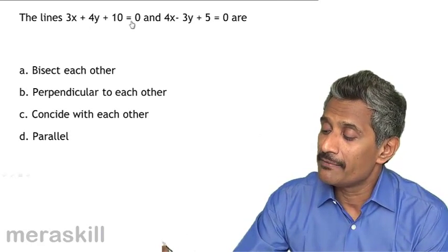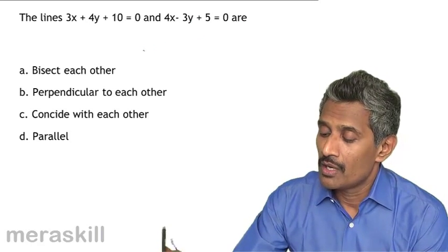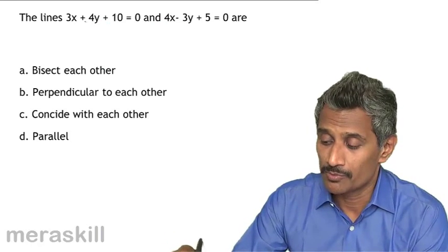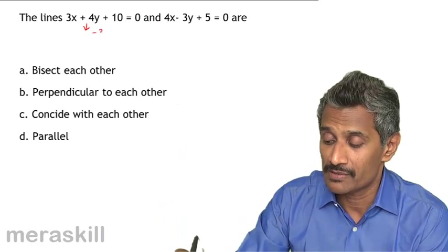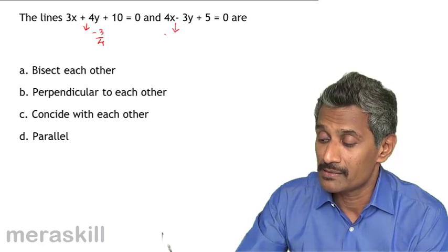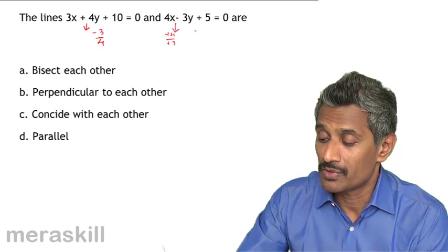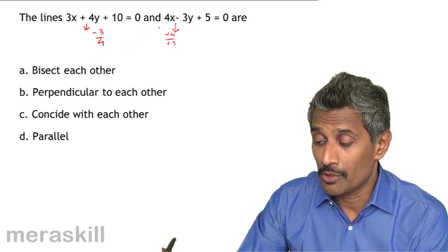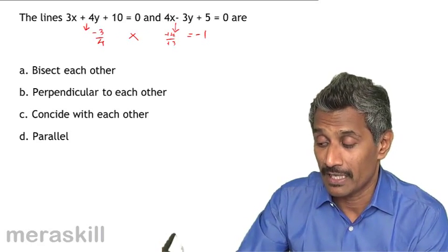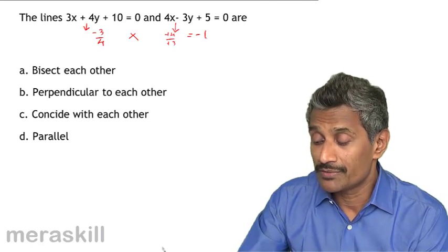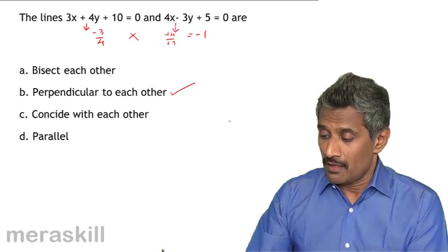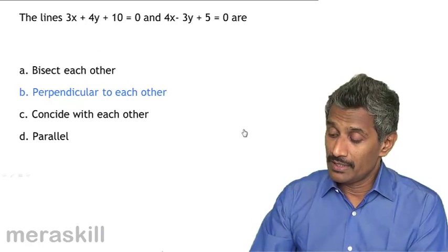Final question: the lines 3x plus 4y and 4x minus 3y plus 5 equals 0 — what is their relationship? The slope of the first line is minus a by b, which is minus 3 by 4. The slope of the second is minus 4 upon minus 3, which is 4 by 3. The slopes are not equal, but their product is minus 3 by 4 times 4 by 3 equals minus 1. Therefore the lines are perpendicular to each other.